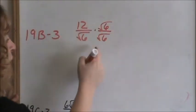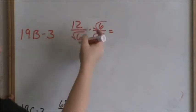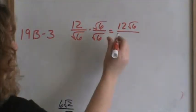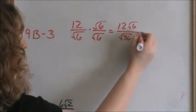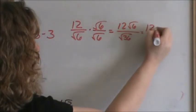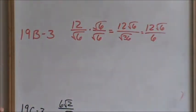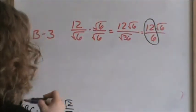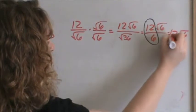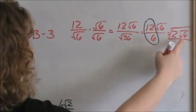Whatever you do in the denominator, you have to do to the numerator. Now, multiplying fractions, you just multiply numerator to numerator: 12 times square root of 6 is 12 times square root of 6. Denominator to denominator: square root of 6 times square root of 6 is square root of 36. Now we simplify the radicals. Square root of 6 does not simplify any more than that, so we leave that. Square root of 36 is 6. Always reduce fractions — 12 divided by 6 is 2, and square root of 6 does not simplify any more than that.